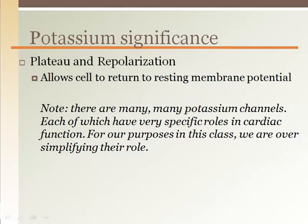Potassium is critical in getting the membrane potential back to negative values by letting the positive ion potassium out of the cell. Drugs that are potassium channel blockers will make it harder for potassium to leave the cell, so it will prolong the repolarization phase, making the cell take longer to achieve resting membrane potential. This type of drug is used to prevent atrial arrhythmias and to slow down the heart rate.